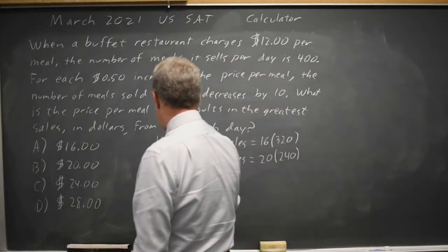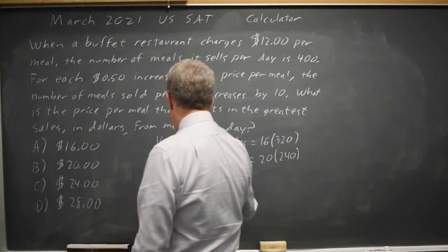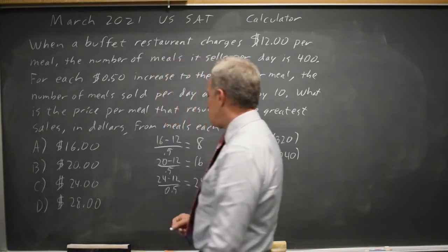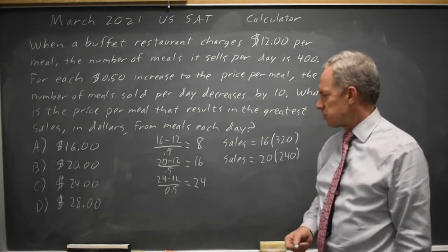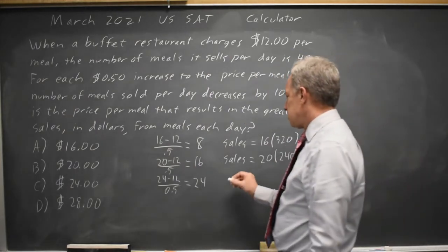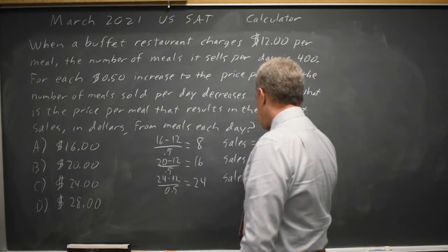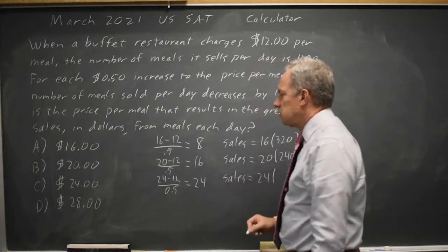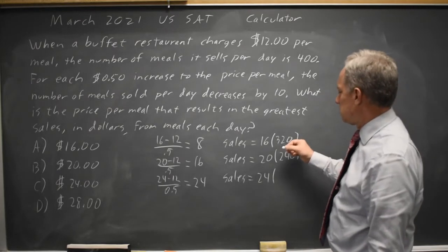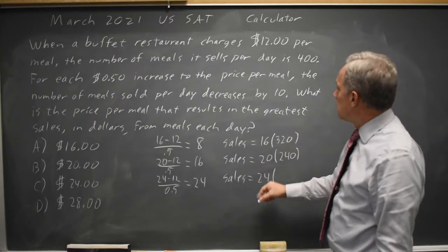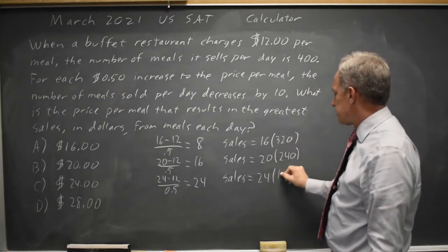For $24, we now have 24 increments of 50 cents at the meal price. So our sales are $24 per meal times 400 minus 240, which is 160 meals.